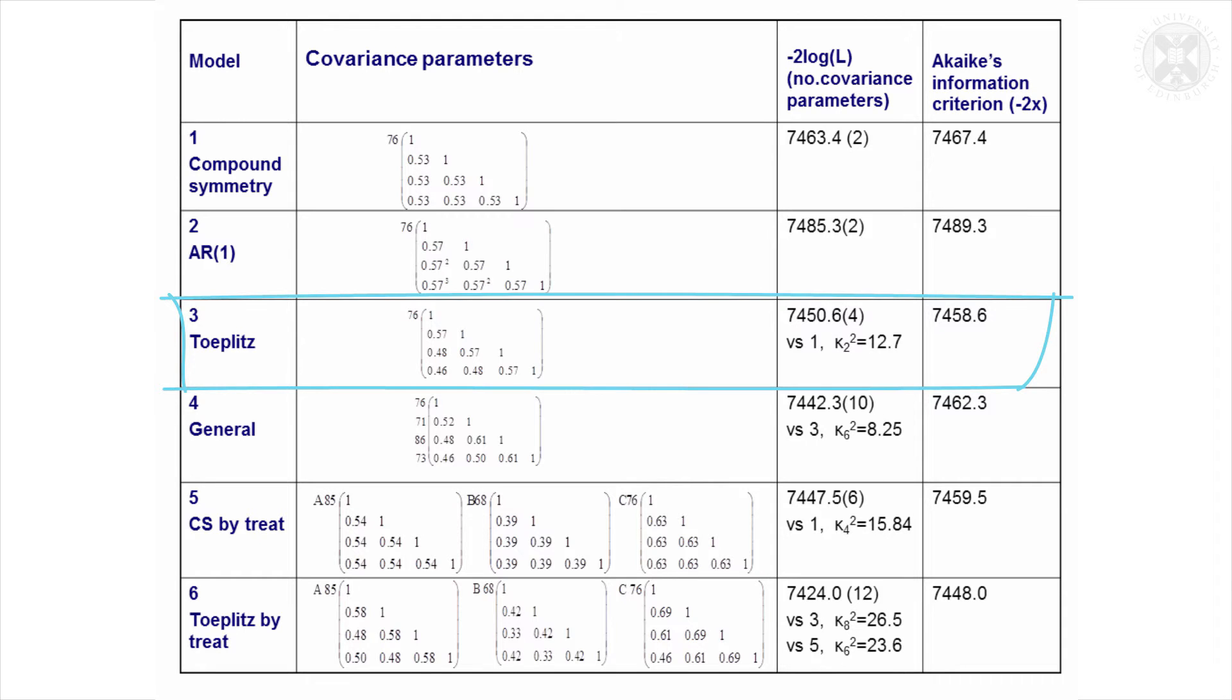We can now do a likelihood ratio test to compare this to model one. Take the difference between minus twice the log likelihood here and for model one. Because there's two extra parameters in this model, that has a chi-squared that can be tested against a chi-squared distribution with two degrees of freedom. It gives a value—the test statistic is 12.7, which is actually significant. So we can conclude that this Toeplitz structure is an improvement on the compound symmetry structure, so it's better to allow these correlations to decrease a bit if they're not just one visit apart.